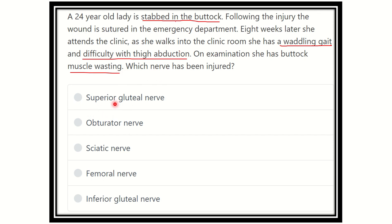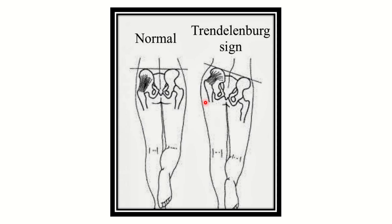The options are: superior gluteal nerve, obturator nerve, sciatic nerve, femoral nerve, and inferior gluteal nerve. We need to find out which nerve is responsible for the muscle wasting, and which muscle damage is causing the waddling gait.